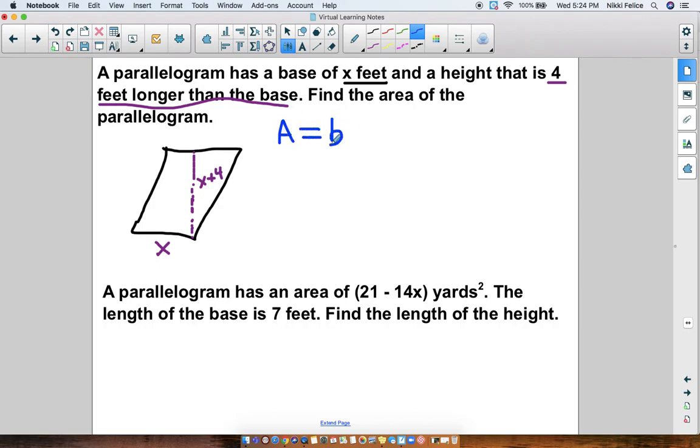Area equals base times height, which means we're going to be doing x as my base times the height is x plus 4. So I'm going to put it in parentheses so I know the x plus 4 stays together, because it's all talking about one part of the triangle, the height. This is a tricky one, because I don't think we've ever done this before, but that's okay. So we know this is distributive property. And we're going to do x times x. What do you get when you multiply x times x? You get not 2x, you get x squared.